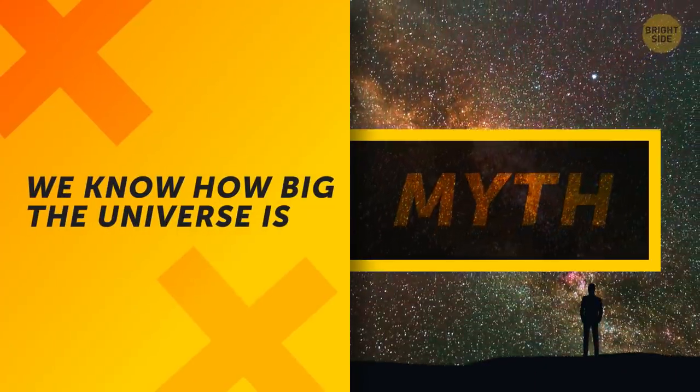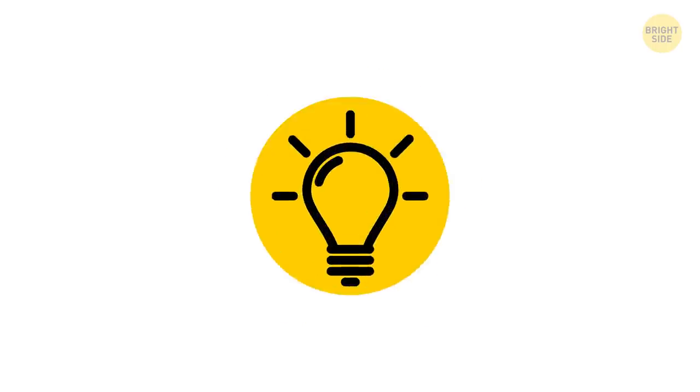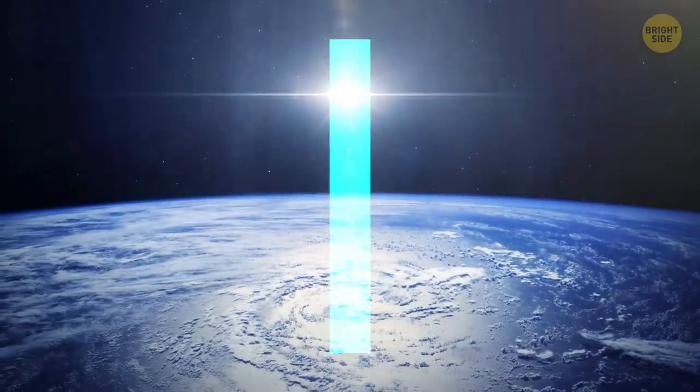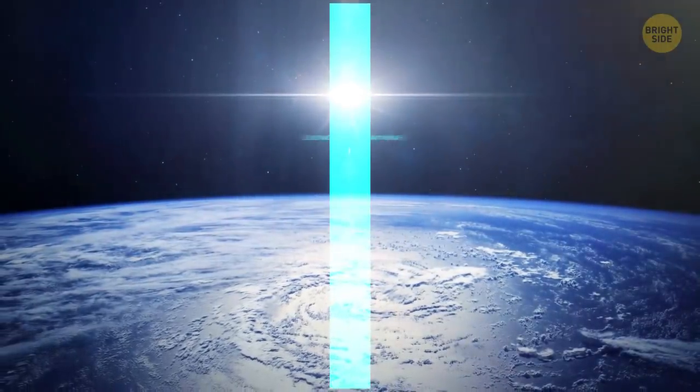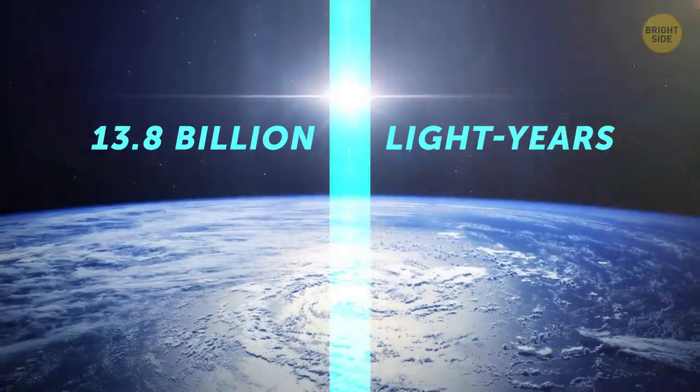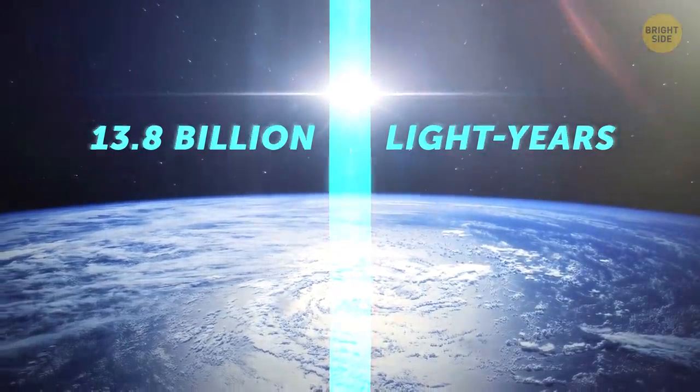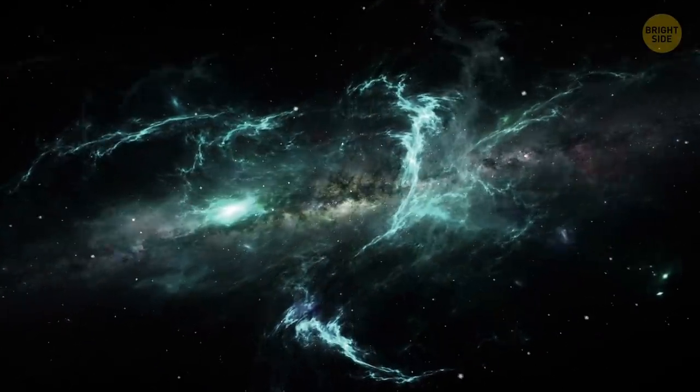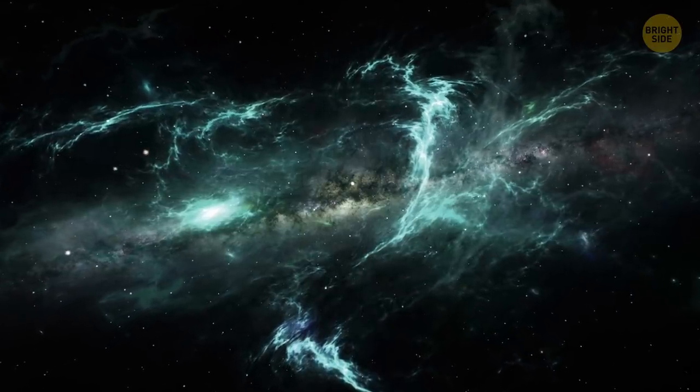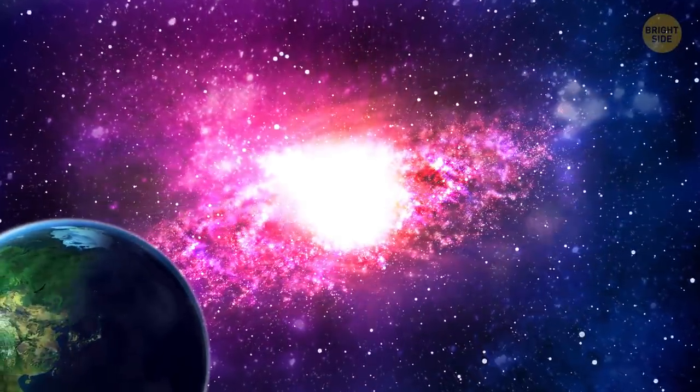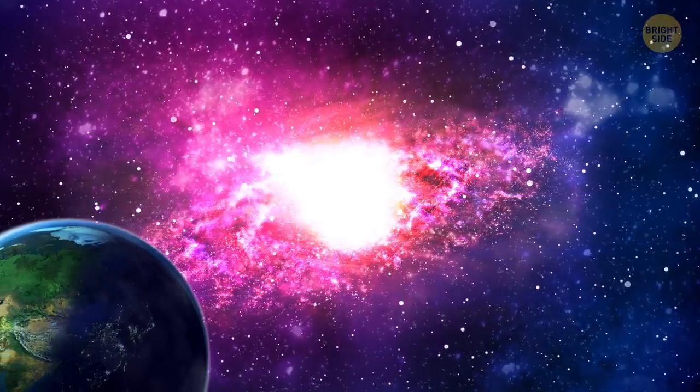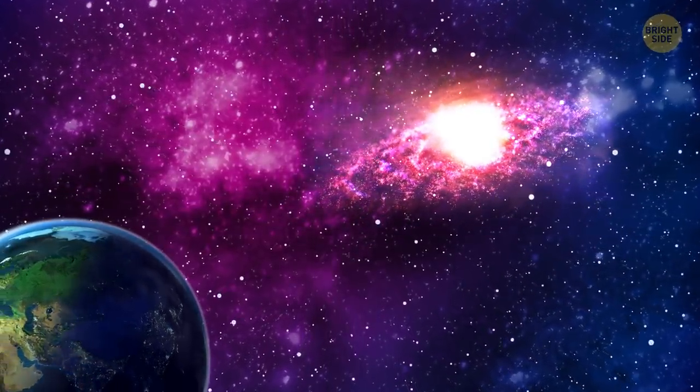We know how big the universe is. The furthest place from where light ever reached us was 13.8 billion light-years away from the Earth. But the universe is constantly expanding extremely fast. And if something was 13.8 billion light-years away from us, by now, it's even farther away.